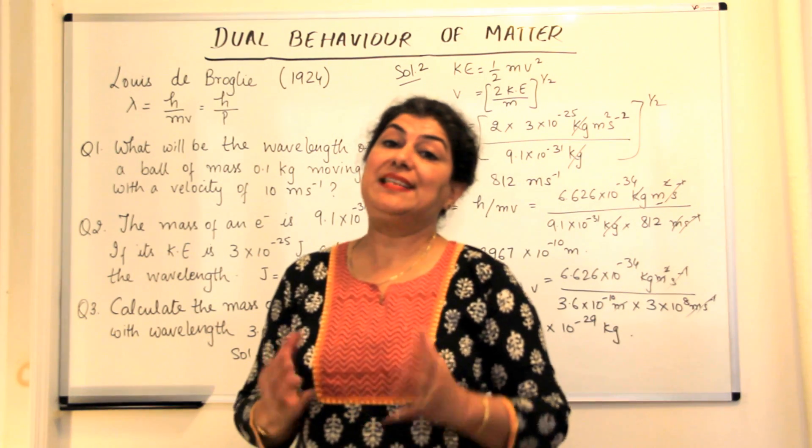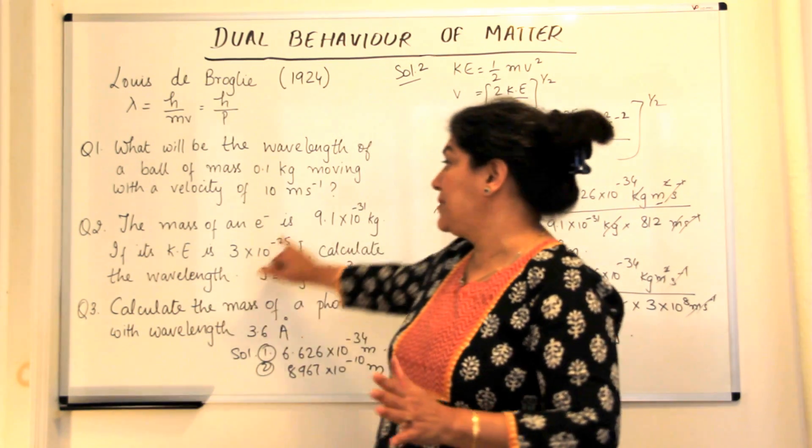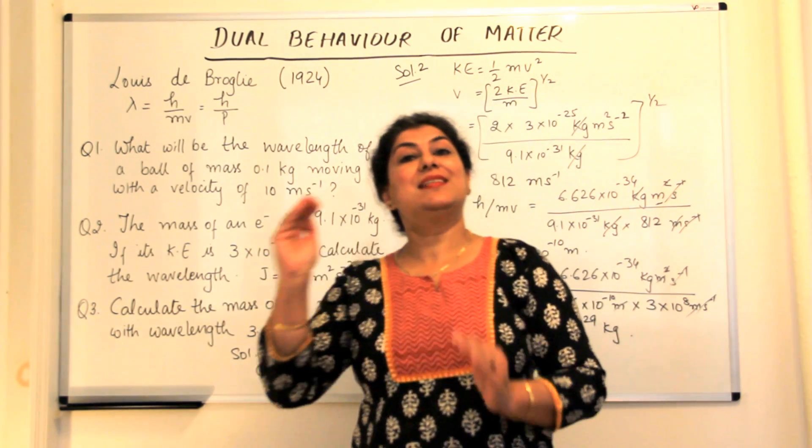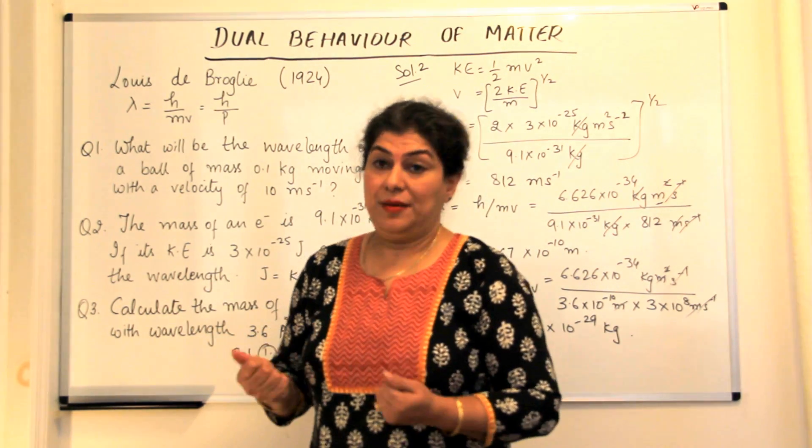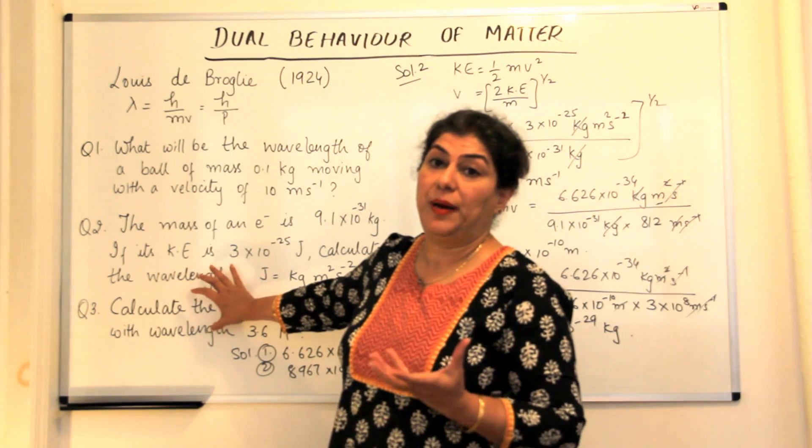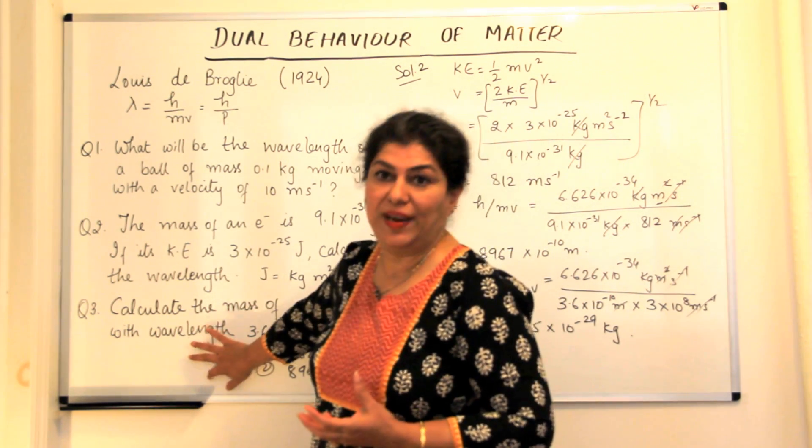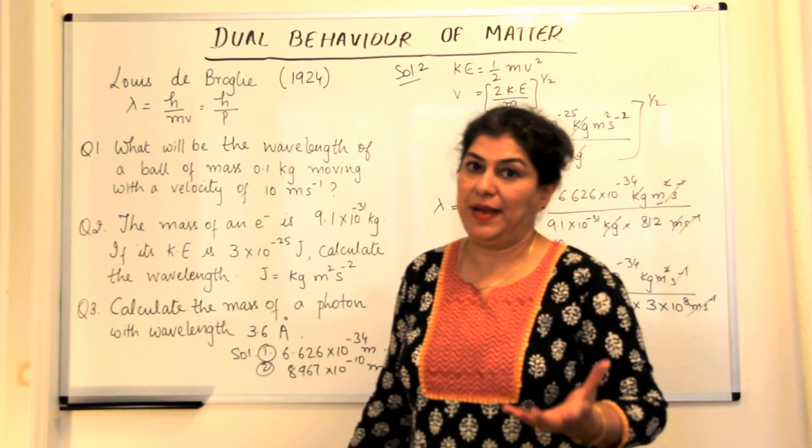So when the mass of the particle or a photon of light is very, very small, a particle like electron, the wavelength is large enough and we can see the wave nature of that particular particle, whether it's the particle of light or it's a particle of matter.